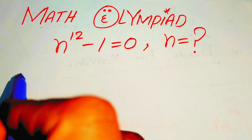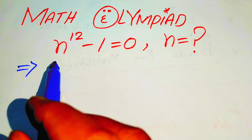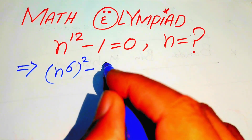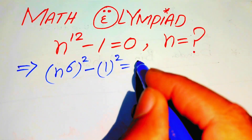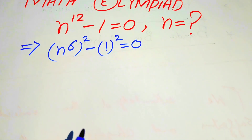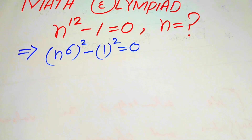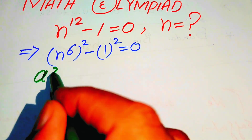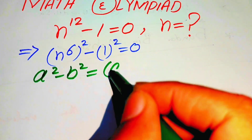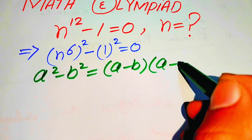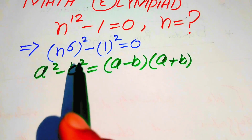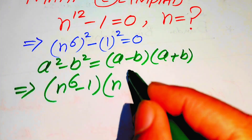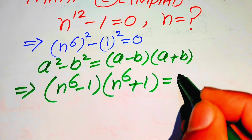The very first step we are going to do is rewrite this equation as n to the power of 12, written as n to the power of 6 whole squared, minus 1 squared equals to 0. Here we use the difference of squares identity: a squared minus b squared equals to a minus b times a plus b. So the above term is written as n to the power of 6 minus 1 times n to the power of 6 plus 1 equals to 0.